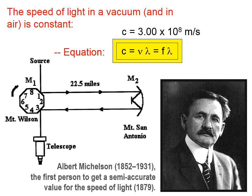Albert Michelson, pictured in the lower right, was the first person to get a semi-accurate value for the speed of light in the late 19th century. Here is a picture of his setup — it is not to scale. It involved a rotating octagonal mirror, and 20-some miles away, another curved mirror and a flat mirror. The trick was to rotate the octagonal mirror at the right rate so that a light source would hit the mirror, travel 20-some miles to the curved mirror, hit the flat mirror, bounce back, and return to the octagonal mirror, where it could be seen through a viewing telescope. The rate of rotation, coupled with the distance, allowed Michelson to come to within 99% of the current accepted value of the speed of light. Pretty ingenious experiment.